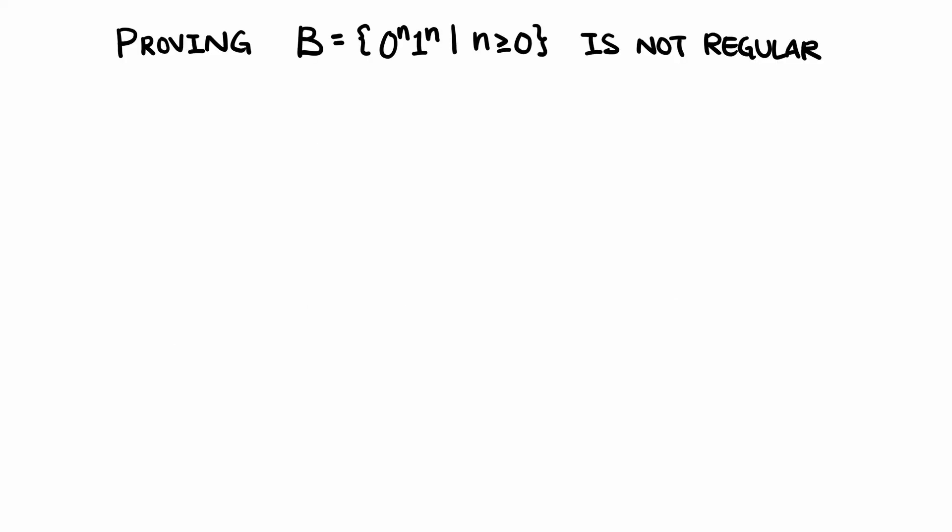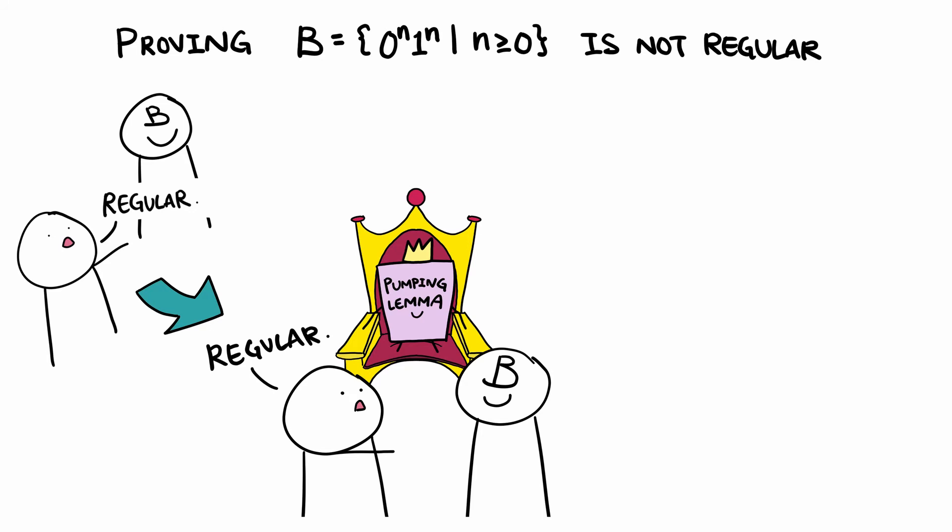Let's say we want to prove that a language 0 to the n, 1 to the n is not regular. Because this is a proof by contradiction, we first claim that it is regular.